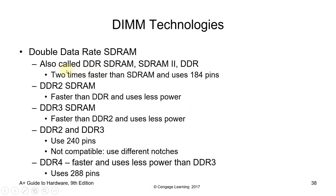DIMM technologies: DDR (Double Data Rate) SDRAM is two times faster than SDRAM and uses 184 pins — this is now obsolete. DDR2 is faster than DDR. DDR3 is faster than DDR2. DDR4 is faster than DDR3 — each new version of RAM is faster than the previous one.